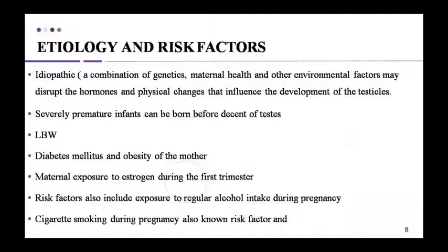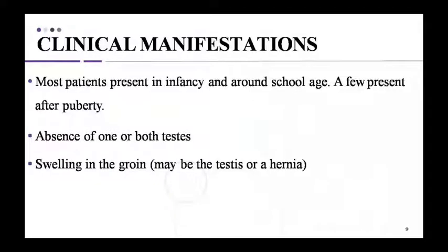Regarding etiology and risk factors, the cause is often idiopathic. Genetics, mother's health, and environmental factors disrupting hormones also play a role. Many premature infants are born without fully descended testes. Low birth weight, maternal diabetes mellitus or obesity, exposure to estrogen during the first trimester, alcohol intake, and cigarette smoking during pregnancy are all responsible risk factors.